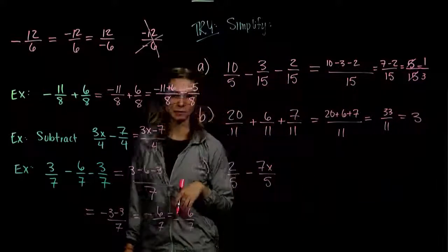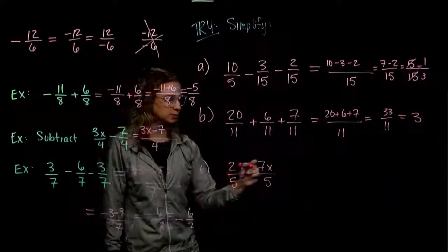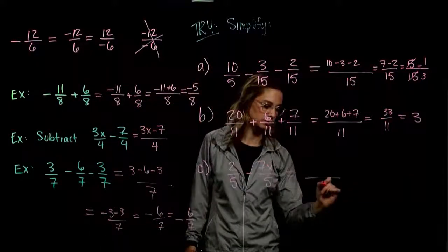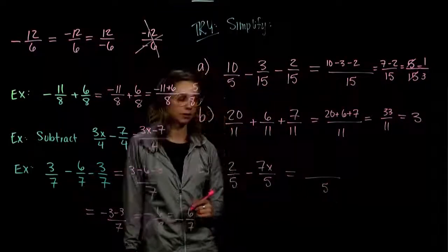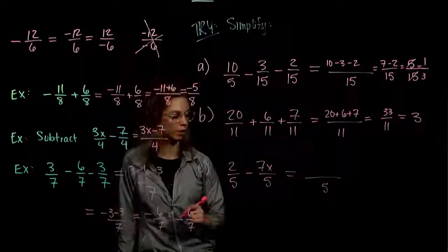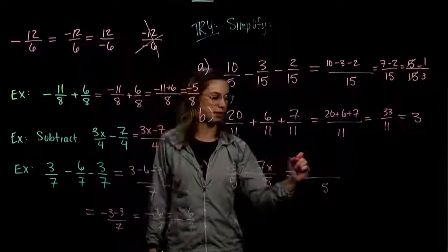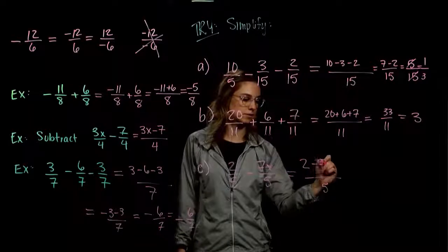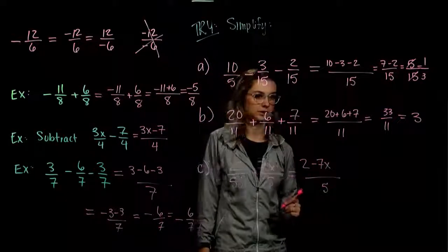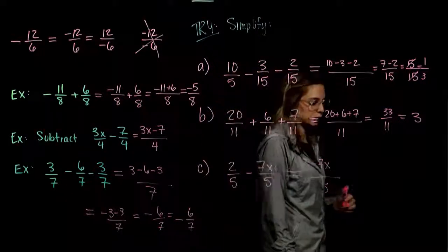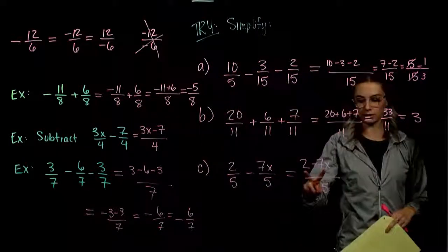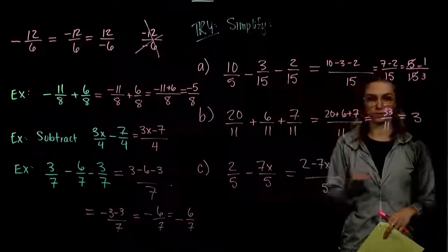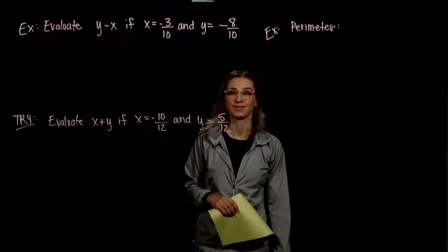In part C, we've got our common denominator, so we keep that. Moving across the top: 2 minus 7x. Those two terms are not alike, so we can't combine them — that's as far as we can go.